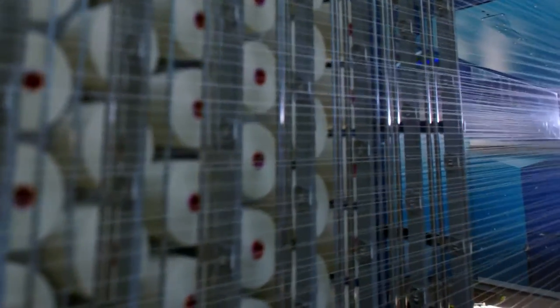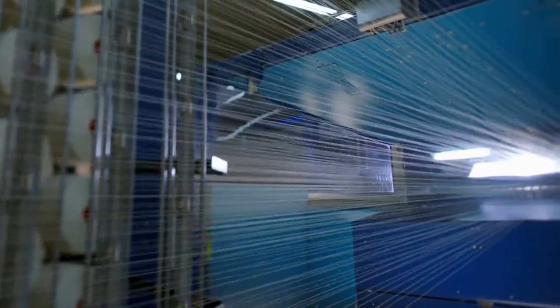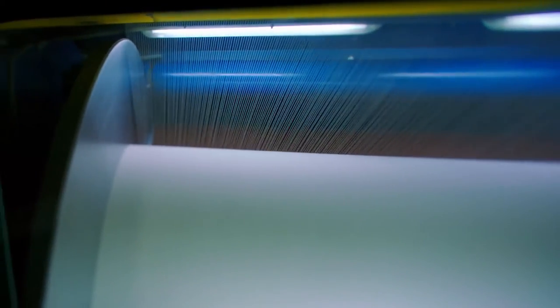The cones are fed automatically into the machine. Single strands of cotton yarn from the cones are then wound onto an enormous beam. A beam can hold an average of four and a half thousand yards, arranged alongside one another.